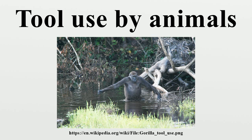Definitions and Terminology: The key to identifying tool use is defining what constitutes a tool. Researchers of animal behavior have arrived at different formulations. In 1980, Beck published a widely used definition of tool use. More recently, this has been modified to: the external employment of an unattached or manipulable attached environmental object to alter more efficiently the form, position, or condition of another object, another organism, or the user itself, when the user holds and directly manipulates the tool during or prior to use and is responsible for the proper and effective orientation of the tool.